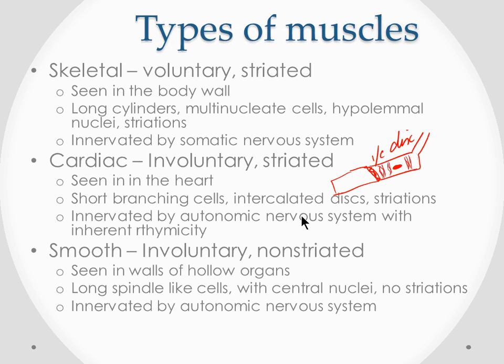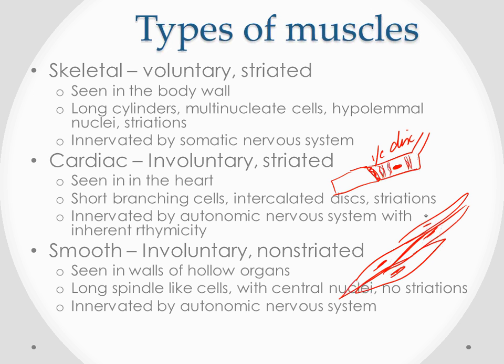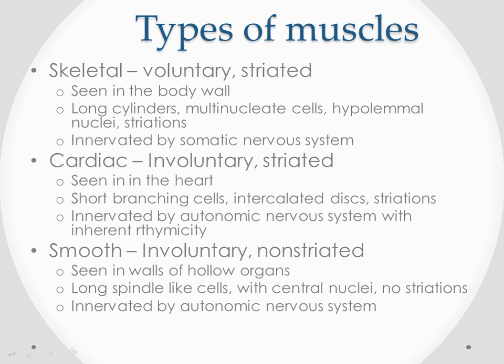Smooth muscle is also involuntary, but this one is non-striated - there are no striations. These are spindle-shaped cells, long spindles that look like fish swimming in a stream. They are seen in the walls of hollow organs - all your organs which have a cavity inside, like your stomach, urinary bladder, any duct in the body like the bile duct or pancreatic duct, ureter, small intestine, large intestine. Because they're involuntary, they are innervated by the autonomic nervous system.